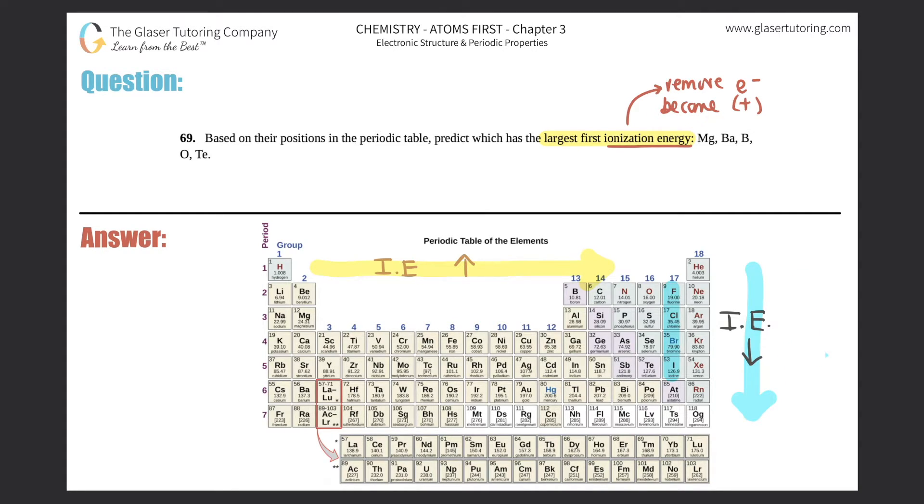Electrons that are farther away from the nucleus don't really have an attraction towards the nucleus, so they can get lost. So the bigger the atom, the easier it is to remove an electron. That's why the ionization is so low down here as opposed to up here.